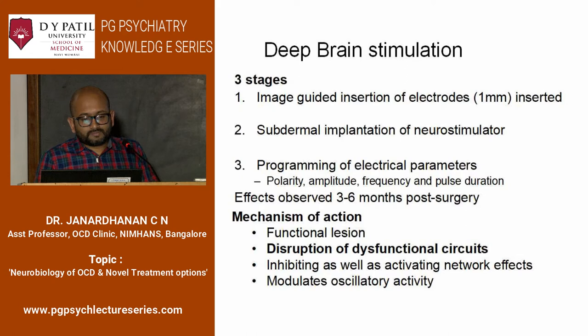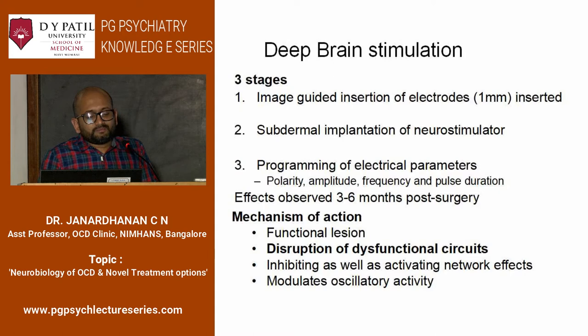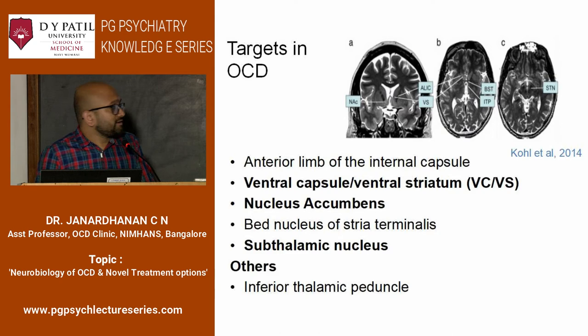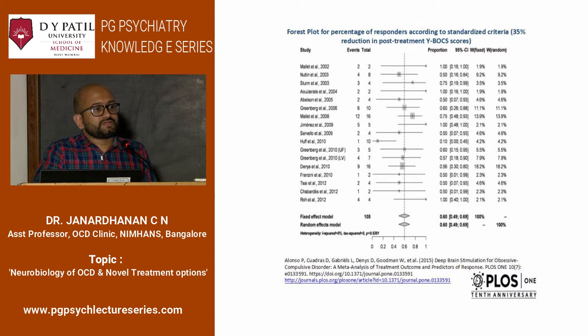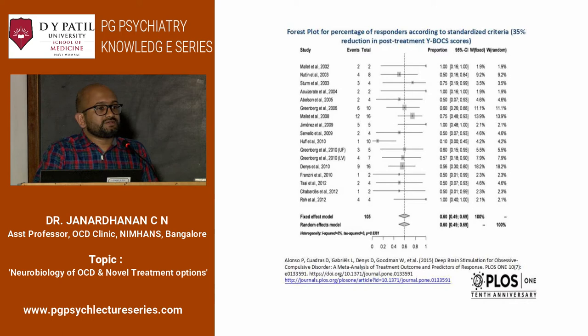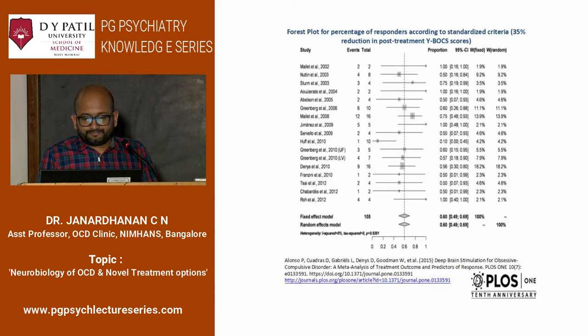Deep brain stimulation has three stages: image-guided insertion of electrodes, subdermal implantation of neurostimulator, and programming of electrical parameters — calibration done periodically. The mechanisms are not completely understood; it is supposed to cause functional disruption in the circuitry of OCD. The targets to remember are: ventral capsule/ventral striatum, nucleus accumbens, and subthalamic nucleus. A meta-analytic forest plot shows an effect size of approximately 0.6, coinciding with the wisdom that around 40-60% of individuals might respond. Overall surgical outcome: 14-60% of people improve 6 to 24 months after surgery — there is no immediate response seen with any of these surgical procedures.